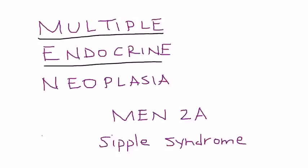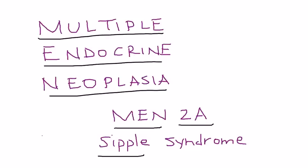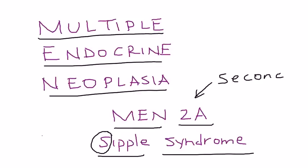Multiple endocrine neoplasia is the topic for this video — in particular, multiple endocrine neoplasia type 2A, also known as Sipple syndrome. The way to remember this: Sipple begins with S, and 2A is the second type of MEN, which also begins with S.